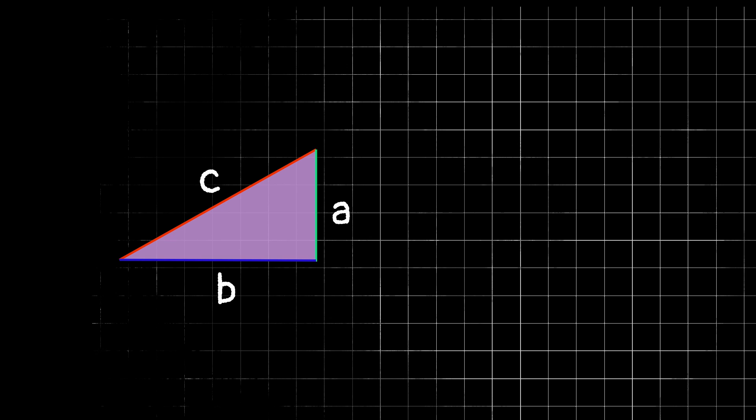So the Pythagorean theorem says if we take each of the legs, or the shorter sides of the triangle, square them, and add them together, we will get the same value as taking the hypotenuse and squaring it.